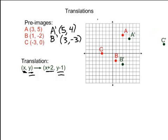For C prime, if you add 2 to the x coordinate, you get negative 1. If you subtract 1 from the y coordinate, you also get negative 1. When you plot (-1, -1), you end up here.